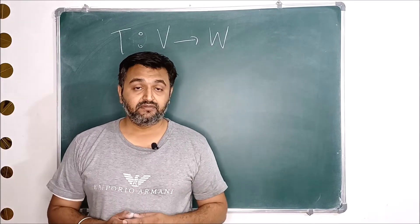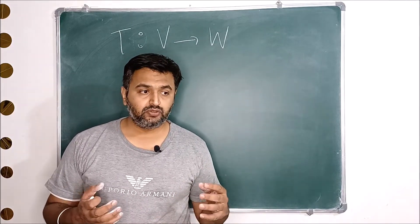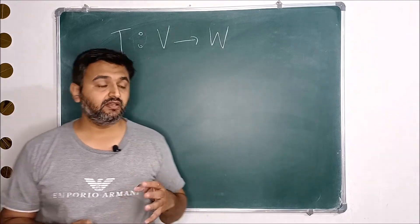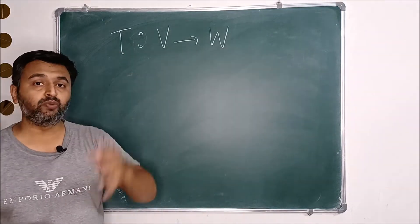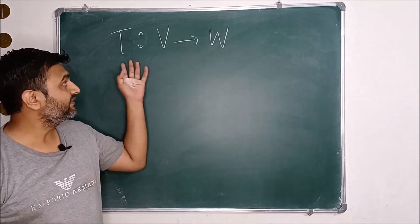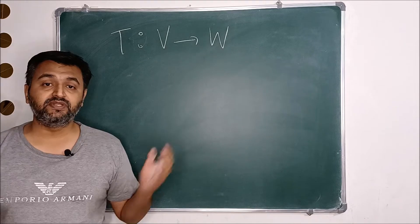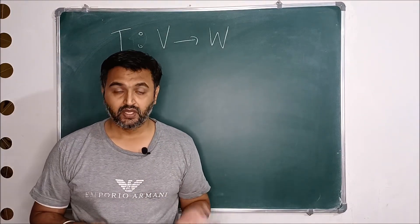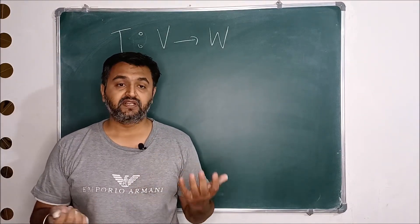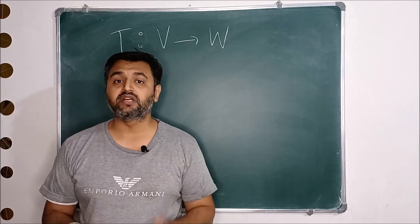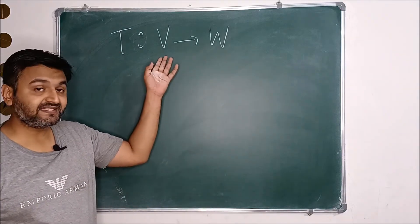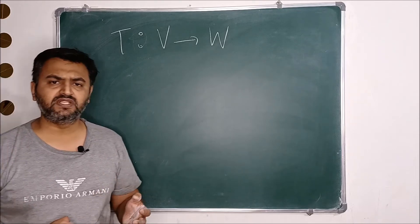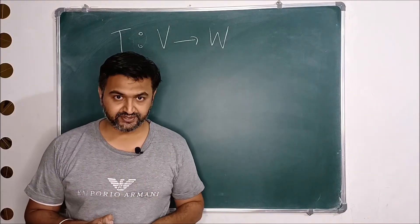Hey everyone. In last lecture, we talked about linear transformations. We saw that when you have a vector space V and W over real numbers, we defined when a function is called a linear function, linear map, or linear transformation. After that, in the next lecture, we saw about the kernel — the kernel is a subspace of the domain space. Links to those lectures can be found in the description.